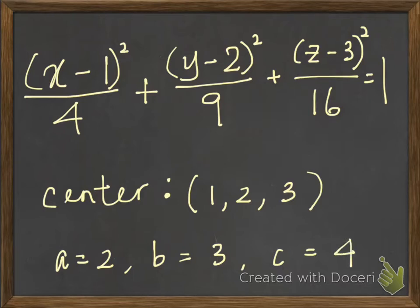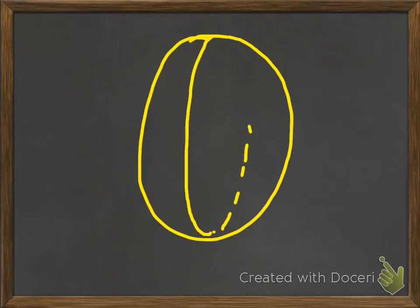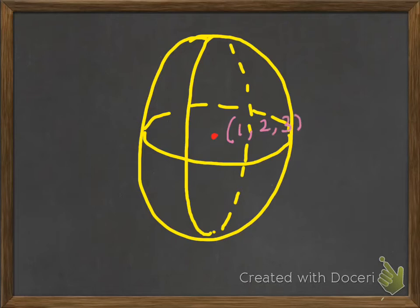We are going to use all this information to sketch the ellipsoid first before sketching the coordinate axis. Let's take a look. First, you sketch the ellipsoid. And then, plot the center and label it.